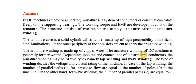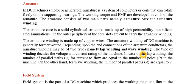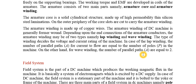Laminations are used to reduce eddy current losses. On the outer periphery of the core, slots carry the armature winding, which is made of copper. This winding is former-wound — meaning the winding is prepared first and then placed directly into the armature slots. Depending on the end connections of the armature conductors, there are two types of windings: lap winding and wave winding.